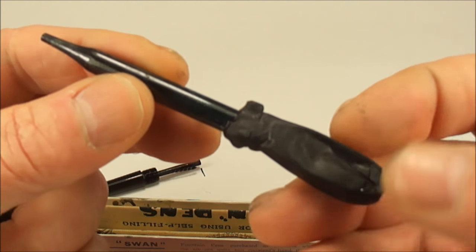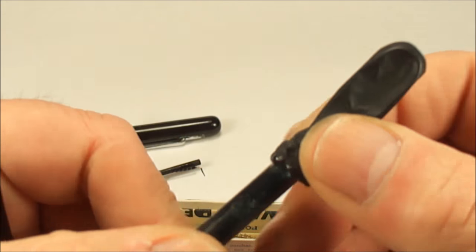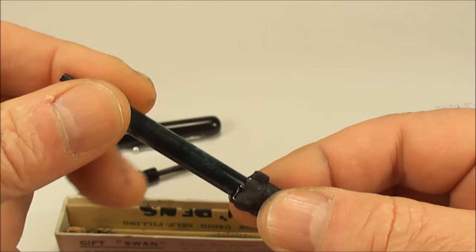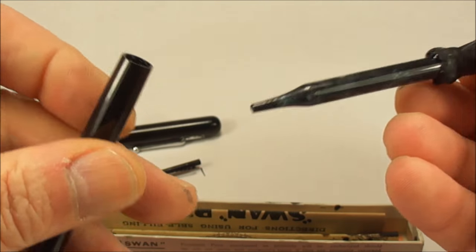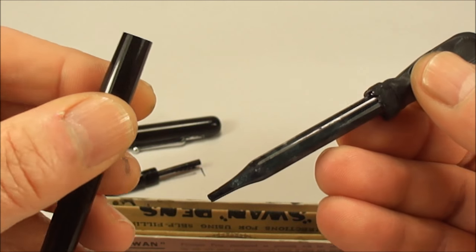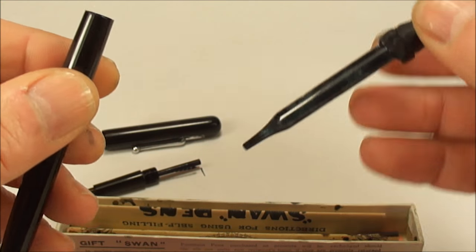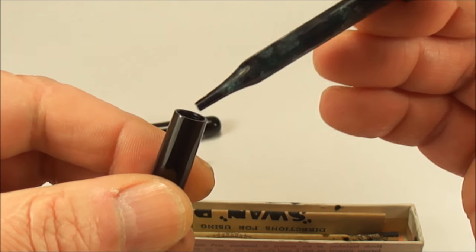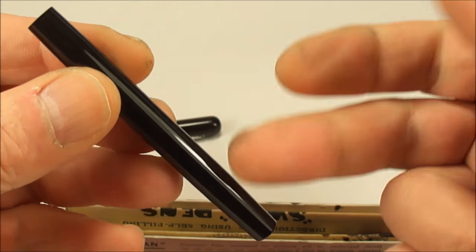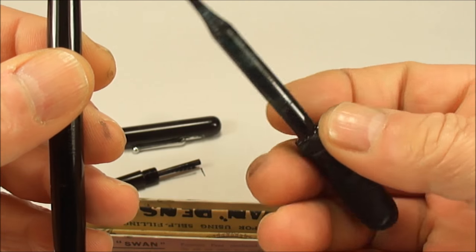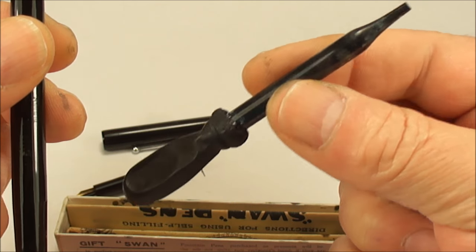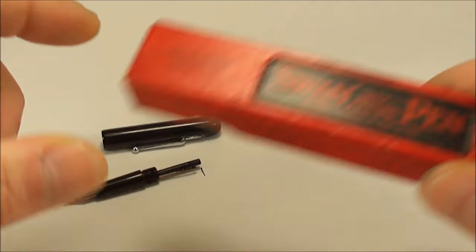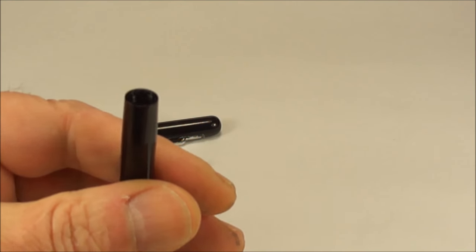Inside this box here is an original eyedropper. You can see the sort of the rubber is actually solidified now, but this is an original eyedropper. What you would have done in the period of 1915s, you would dip that in the ink, get some ink in the eyedropper, and you would drop it into the barrel and fill the pen. Hence the name an eyedropper fountain pen.